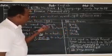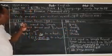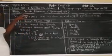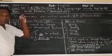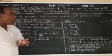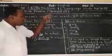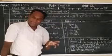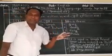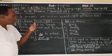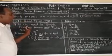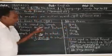Today we are learning about two forms of verb. There are five kinds of verb forms: base form, S form, past form, present participle form, and past participle form. Today we have learnt only the base form and the S form.